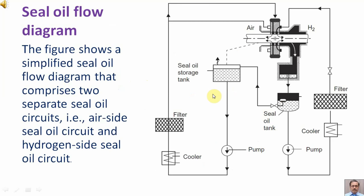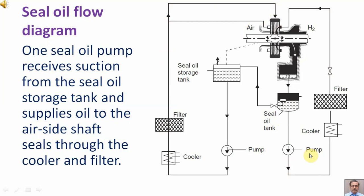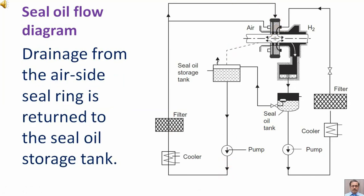One seal oil pump receives suction from the seal oil storage tank and supplies oil through the cooler and filter to the air side shaft seals. Drainage from the air side seal ring is returned to the seal oil storage tank.